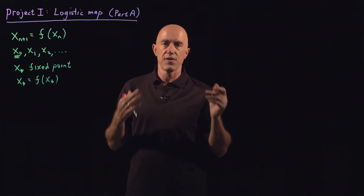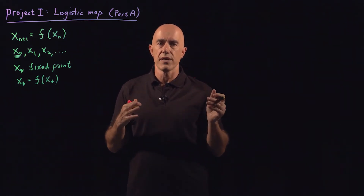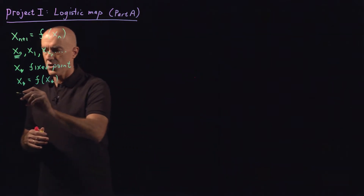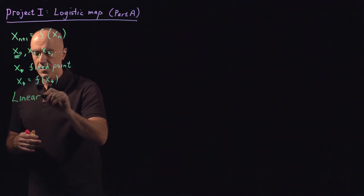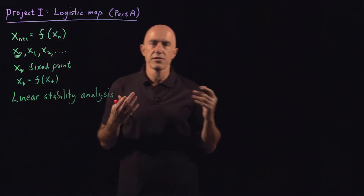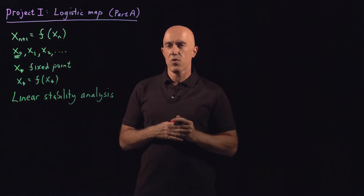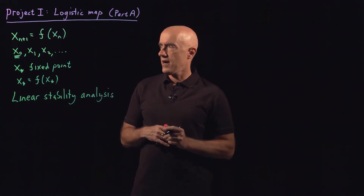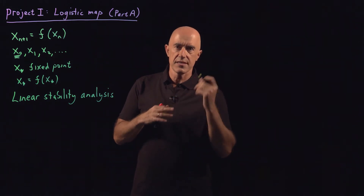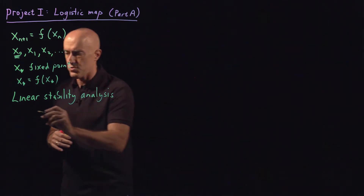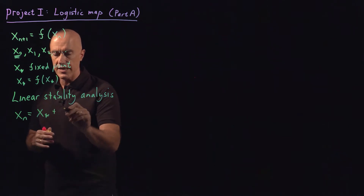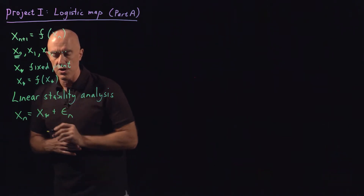We would like some analytical theory to tell us whether a fixed point is stable or unstable. That's called linear stability analysis. To do a linear stability analysis, you translate the verbal description into mathematics. We want to be close to a fixed point and see how the distance from it changes. So we let x_n equal x star plus epsilon_n, where epsilon_n represents a small displacement from the fixed point at the nth iteration.